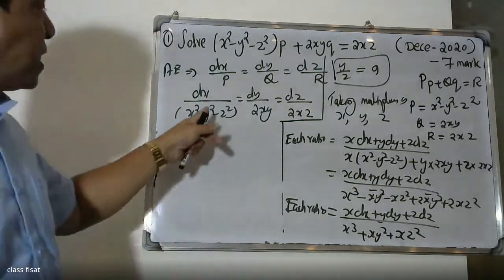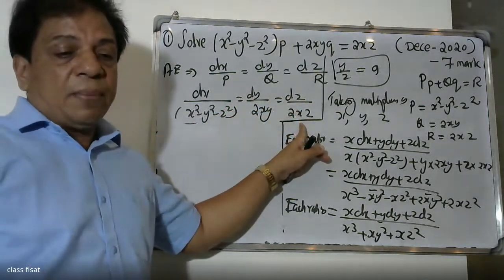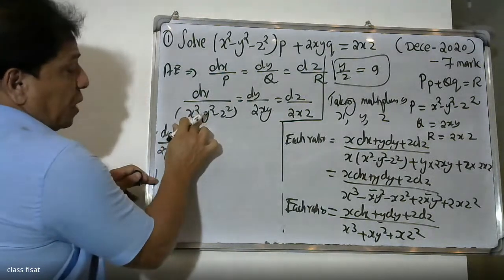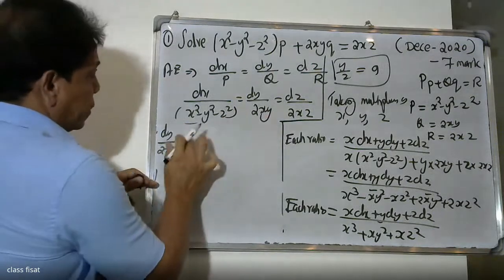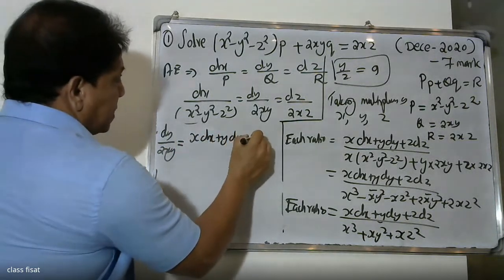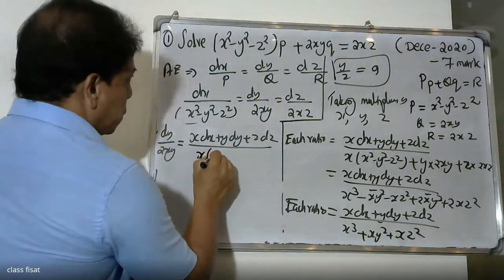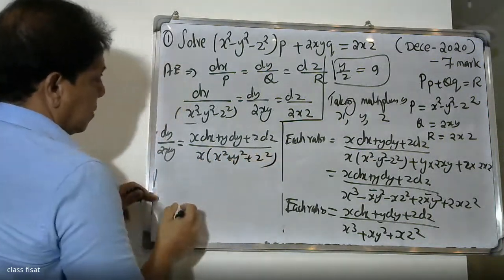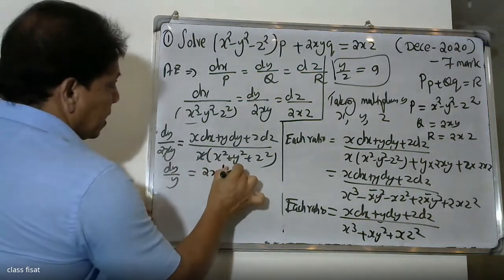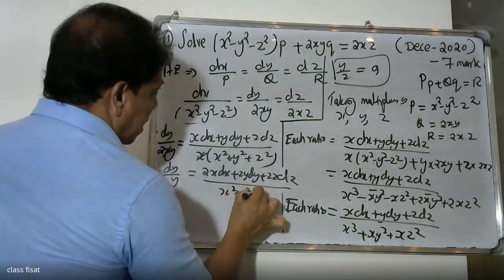Simplifying the denominator: x³ - xy² + 2xy² gives x³ + xy², and -xz² + 2xz² gives +xz². So the combined ratio equals x dx + y dy + z dz, divided by x³ + xy² + xz². Factoring out x from the denominator gives x(x² + y² + z²), and the x cancels.